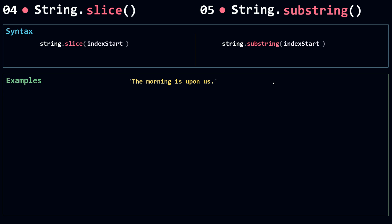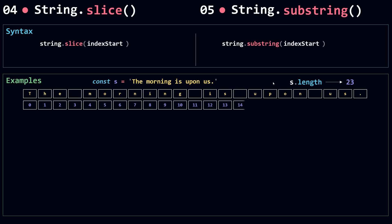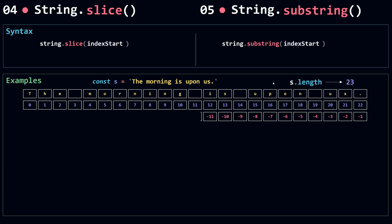I have a string 'the morning is upon us' assigned to a const s, and the string length is 23. I'm going to separate each character and give them their associated indexes from left to right, and also from the end.